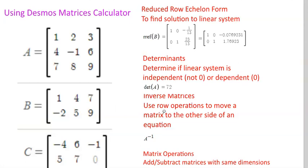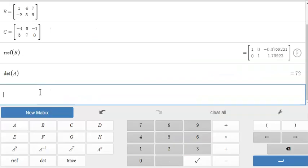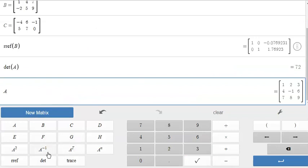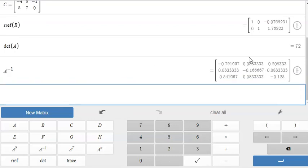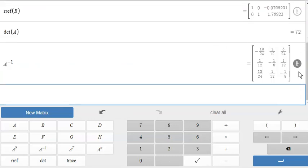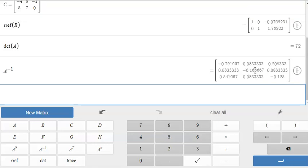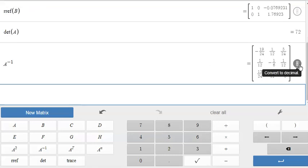Let's look at the next one, inverse matrices, using row operations to move a matrix to the other side of an equation. We'll do that with matrix A. To do this we first press A and then A to the negative one power button and press enter. We have decimals, we can change it to fractions whichever one is called for in the problem.